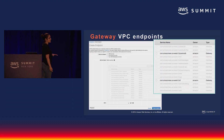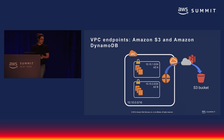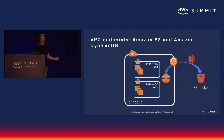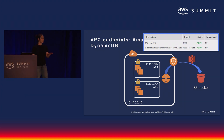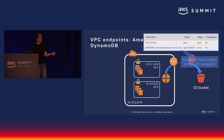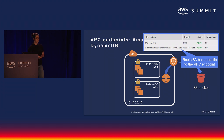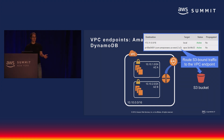With gateway VPC endpoints, they support S3 and DynamoDB, and you send traffic to them by routing. You're going to create a VPC endpoint using the VPC endpoint console or the APIs. Then you create a route in your route table saying: any traffic destined for S3, send that traffic to the VPC endpoint. And it's just going to work. You don't have to change your application or update your code. You're just going to start sending traffic to that VPC endpoint. And if you're not using your internet gateway or NAT gateway for anything else, you can take it away.